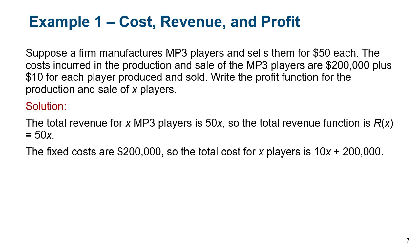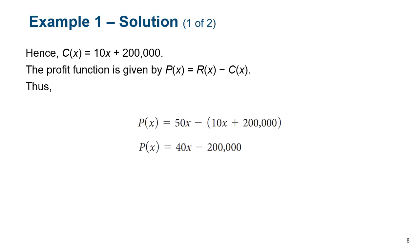Here's another example: a firm manufactures MP3 players and sells them for $50 each. The costs incurred are $200,000 plus $10 for each player produced and sold. The $200,000 is the fixed cost — things like advertising and warehouse space that don't change regardless of how many units you produce. Then it costs $10 to produce each one for parts and labor. So the total cost function is 10x + 200,000, where x is the number of players produced and sold.